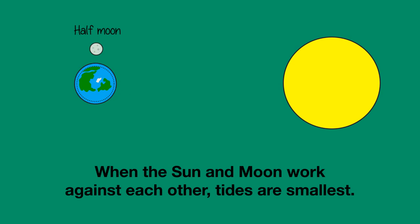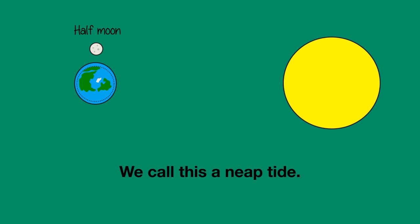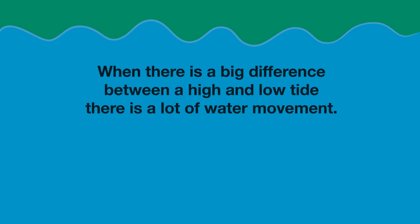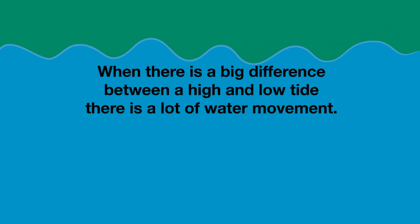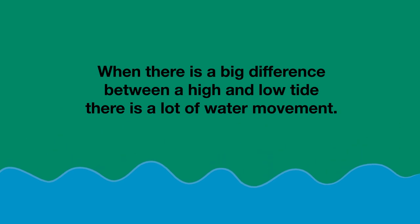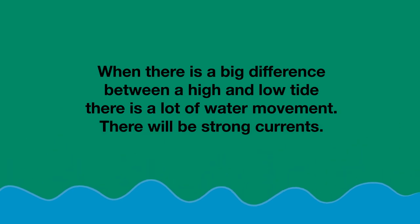When the Sun and the Moon are located at 90-degree angles to each other — visible in the sky as a half Moon — they work against each other and the tides are smallest. We call this a neap tide. When there is a big difference between high and low tide, there is a lot of water movement, which means that there will be strong currents.